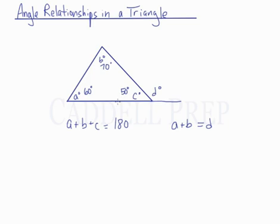Well if this is 50 and this is a straight line, then the entire thing has to add up to 180. So this has to be 180, so that means that D has to be 130. So we have 60 plus 70 is 130, and this is 130.